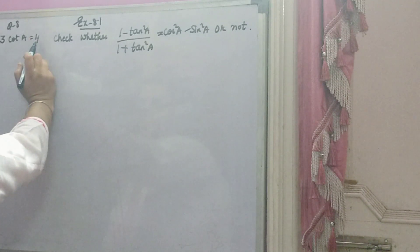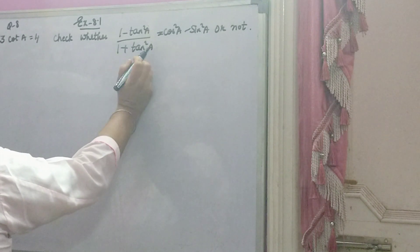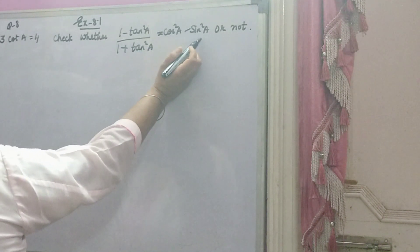It is given that 3 cot A is equal to 4. You have to check that 1 minus tan²A over 1 plus tan²A is equal to cos²A minus sin²A.